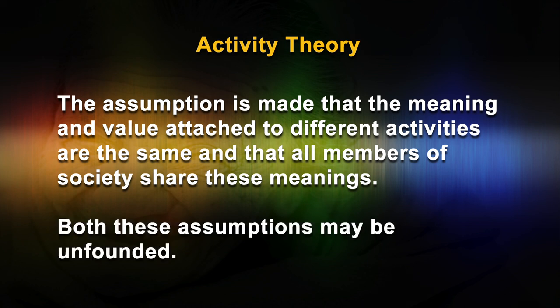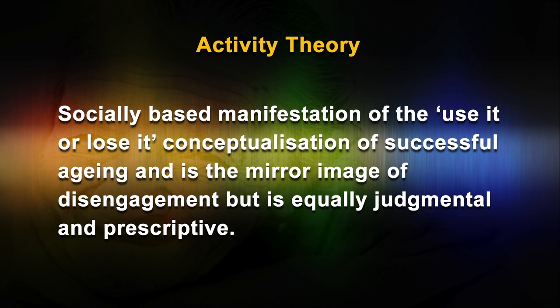Both these assumptions may be unfounded. Activity theory is a perspective view of aging which argues that activity and engagement offer the path to successful aging. This is a socially based manifestation of the 'use it or lose it' conceptualization of successful aging, and is the mirror image of disengagement, but is equally judgmental and prescriptive.